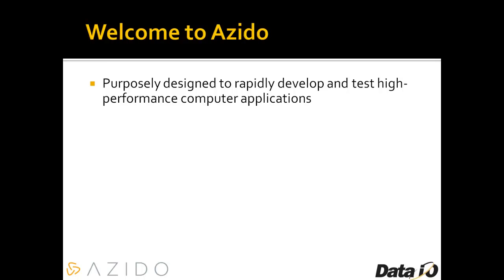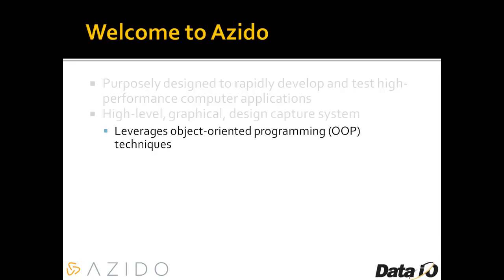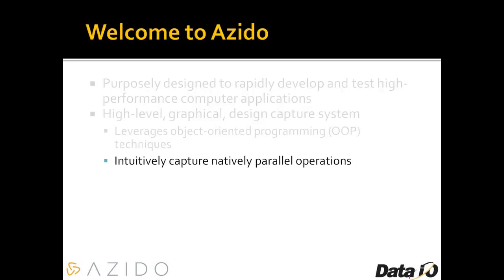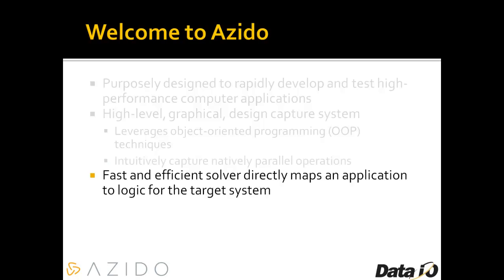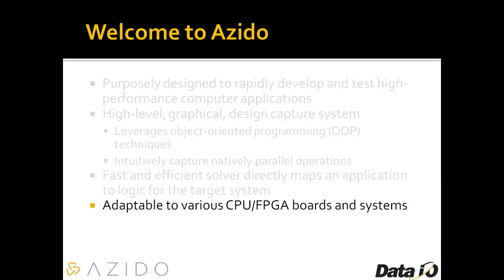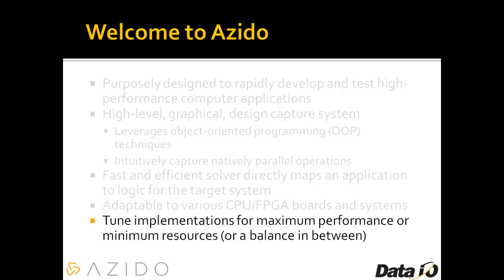Where did Azito come from? Azito was purposely developed to rapidly develop and test high-performance computer applications. It's a high-level graphical design capture system based around object-oriented programming techniques, and it's designed to capture natively parallel operations. Whereas most processor-based languages are sequential, Azito is inherently parallel. Azito also includes a fast and efficient solver that directly maps your application to the logic for your specific target system — targeting the x86 one way, and an FPGA-based system with a completely different set of logic. This makes Azito adaptable to various CPU and FPGA boards and systems, and allows you to tune implementations for maximum performance, minimum resources, or a healthy balance in between.